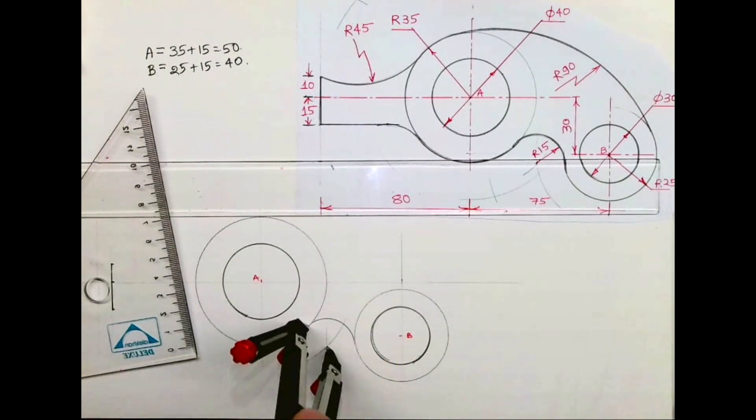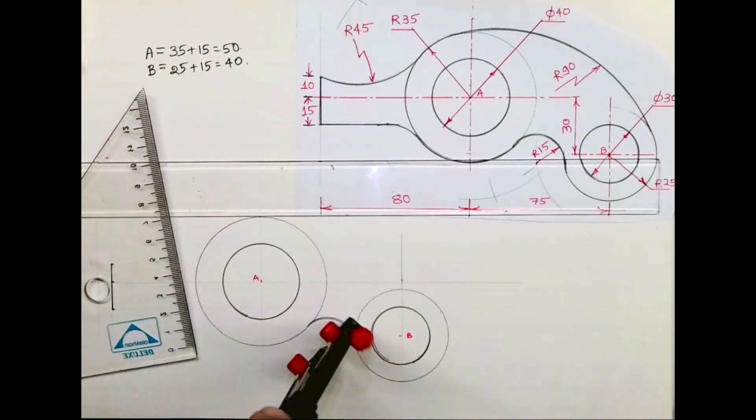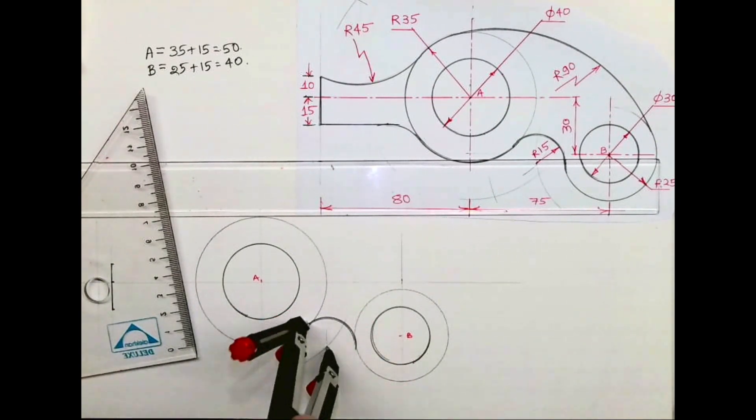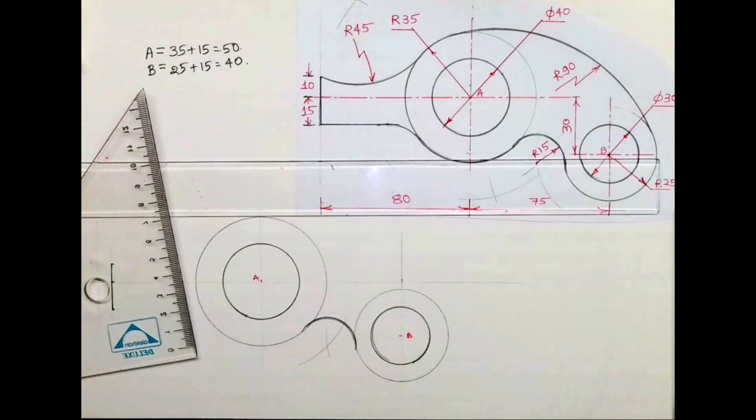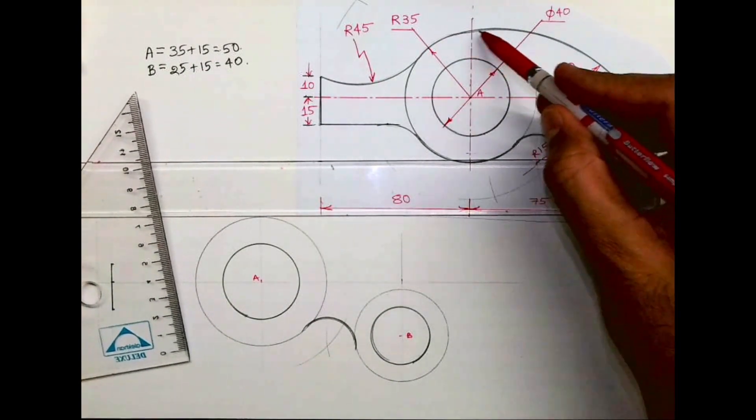From this intersection we will draw radius 15. This is an external arc. To draw an external arc, from A we did 35 plus 15, and from B we did 25 plus 15.